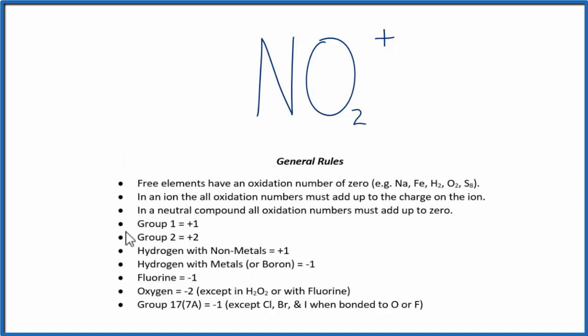We look down the rules, and we see we don't see nitrogen, but here's oxygen right here. And oxygen is a negative 2 for its oxidation number, and that's almost always the case with just a few exceptions.